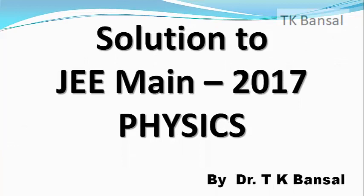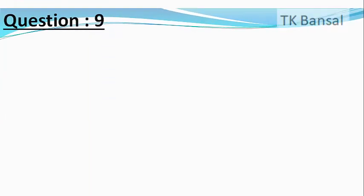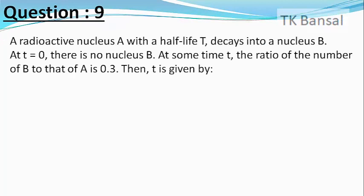Our next question is: A radioactive nucleus A with half-life capital T decays into a nucleus B. At t equals zero, there is no nucleus B. At some time small t, the ratio of the number of nuclei B to that of nuclei A is 0.3. Then small t is given by...